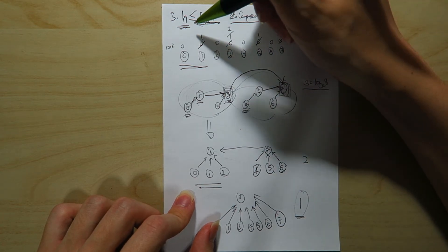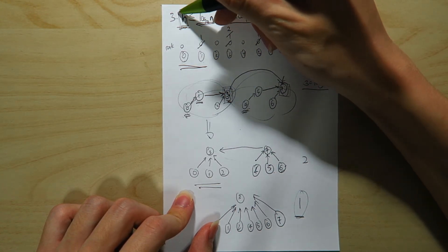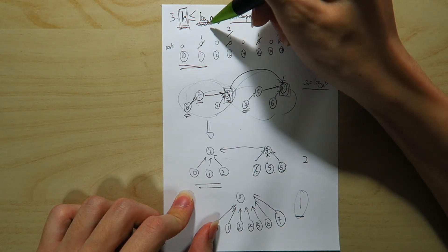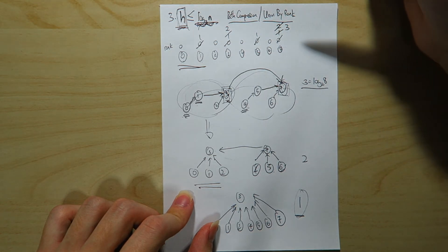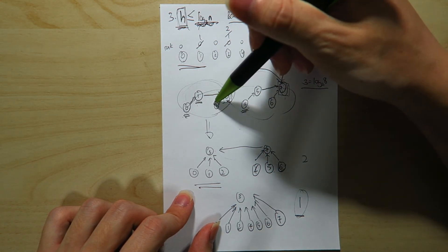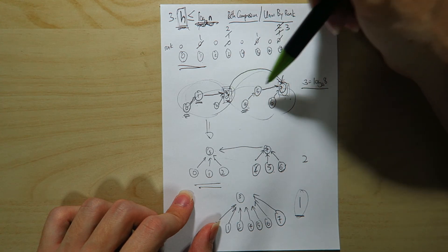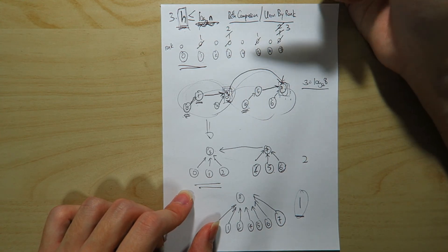So basically, the answer is you can achieve any height that is lower or equal to log 2 of n, as long as you do the union sets in the correct way in order to get your corresponding height.